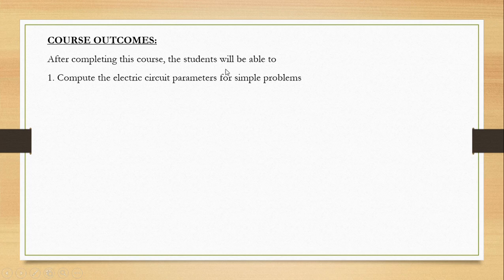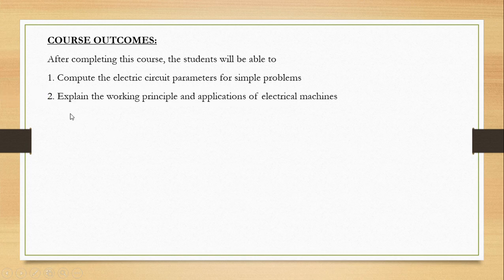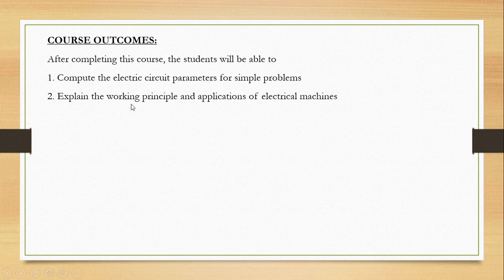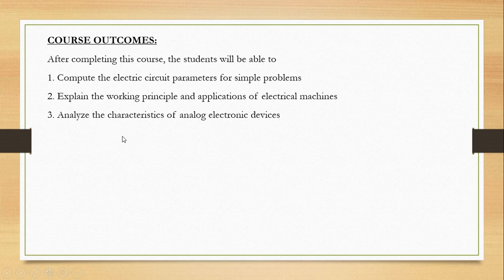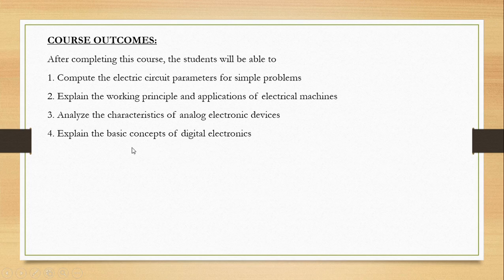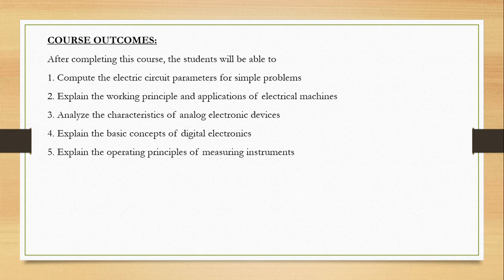students will be able to compute the electric circuit parameters for simple problems. They can explain the working principle and applications of electrical machines. And also, they can be able to analyze the characteristics of analog electronic devices. They can explain the basic concepts of digital electronics. Finally, at the end of course outcome, fifth one is explain the operating principles of measuring instruments.